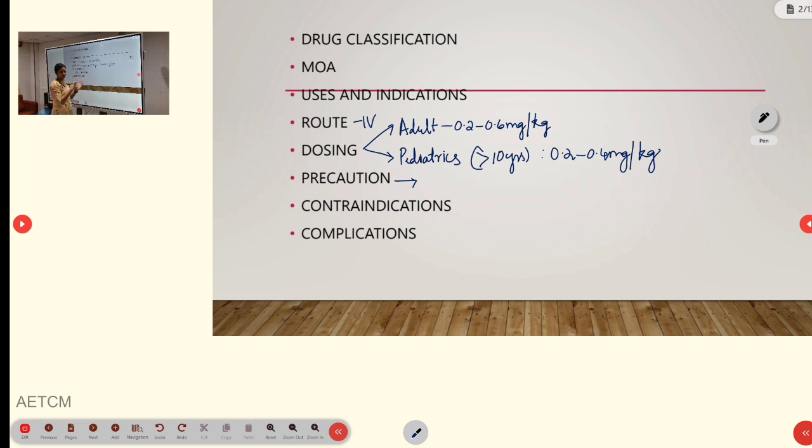While using Etomidate, either we should use it through a large vein or through slow IV boluses, or else we should pre-treat the patient with IV analgesics like Fentanyl or Lidocaine. This is the main precaution we have to take.